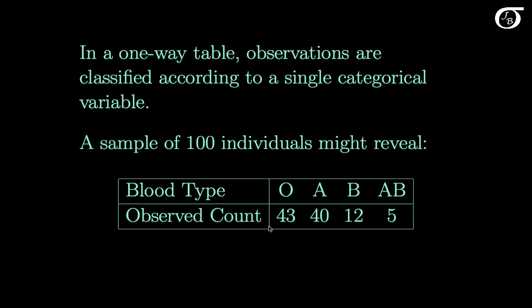Here we have 43 individuals with blood type O and so on. Blood type is a categorical variable — each individual falls into one and only one of these four categories. We might be interested in testing a hypothesis about the distribution of blood types; for example, somebody might contend that these four blood types are equally likely, and we might want to see if this sample gives strong evidence against that claim.